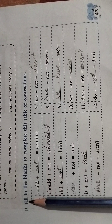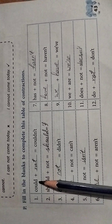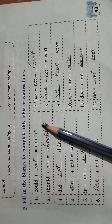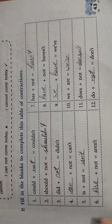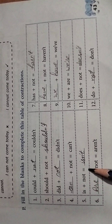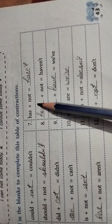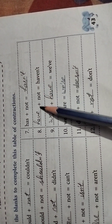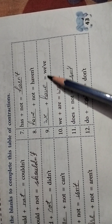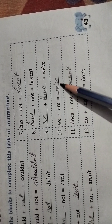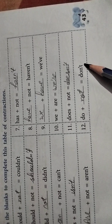Now in exercise number P, fill in the blanks to complete this table of contractions. Could not — couldn't. Should not — shouldn't. Did not — didn't. Can not — can't. Is not — isn't. Are not — aren't. Has not — hasn't. Have not — haven't. We have — we've. We are — we're. Does not — doesn't. Do not — don't.